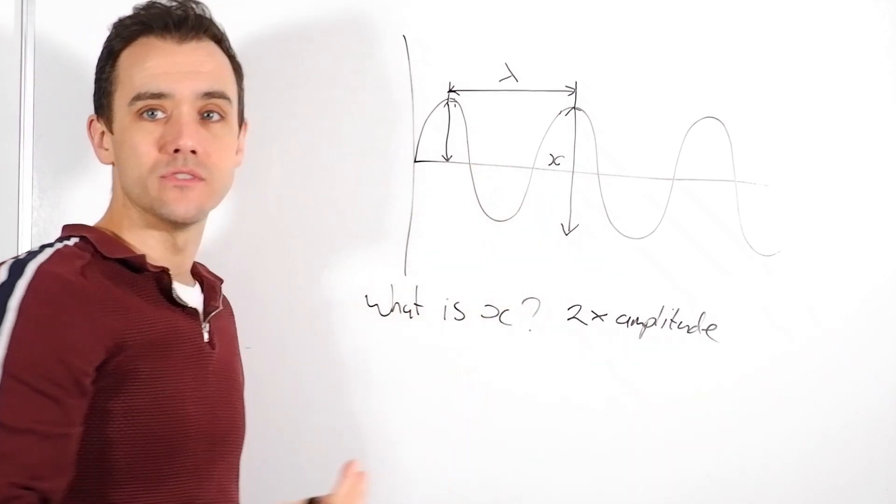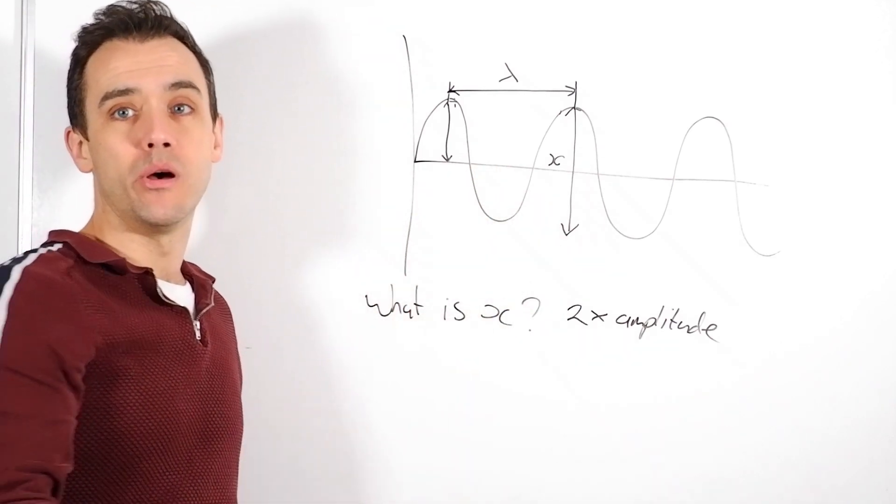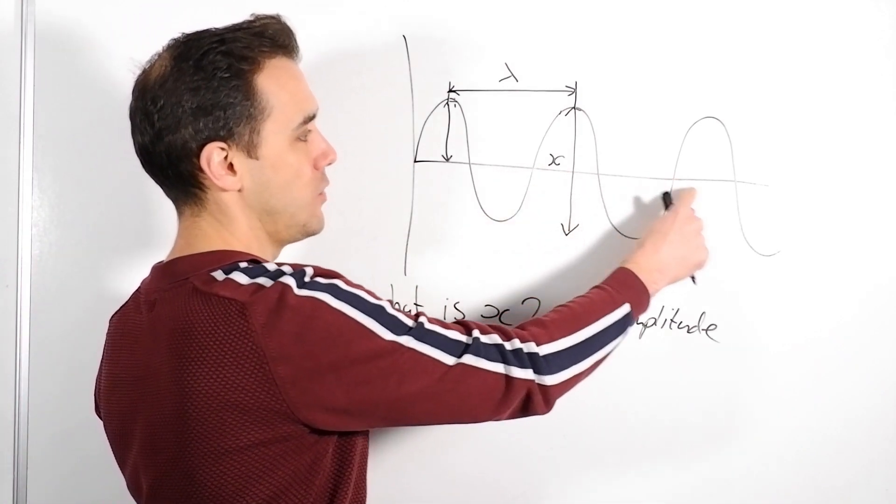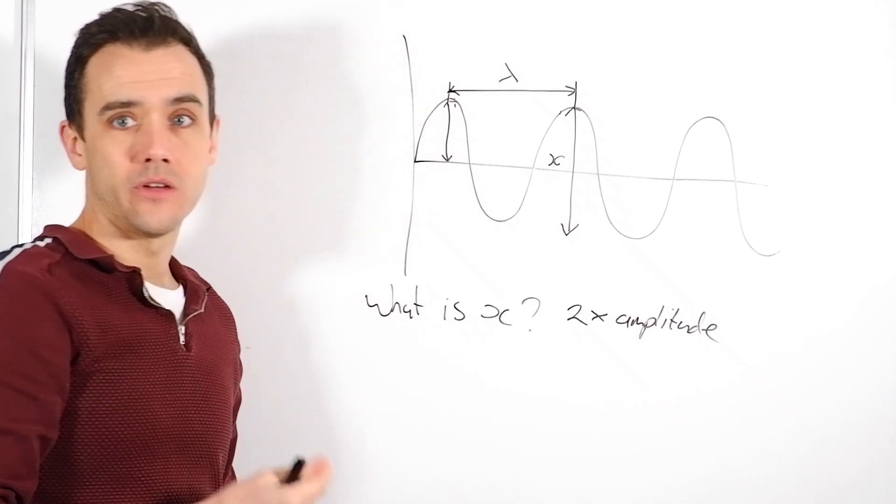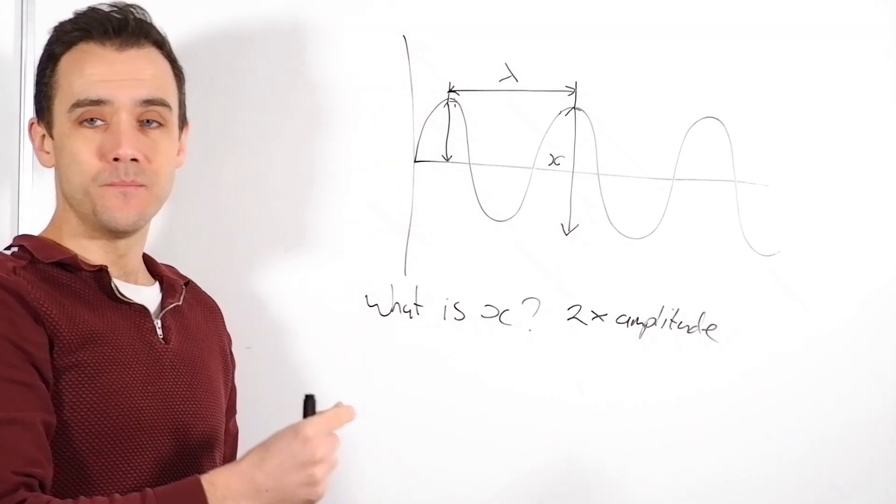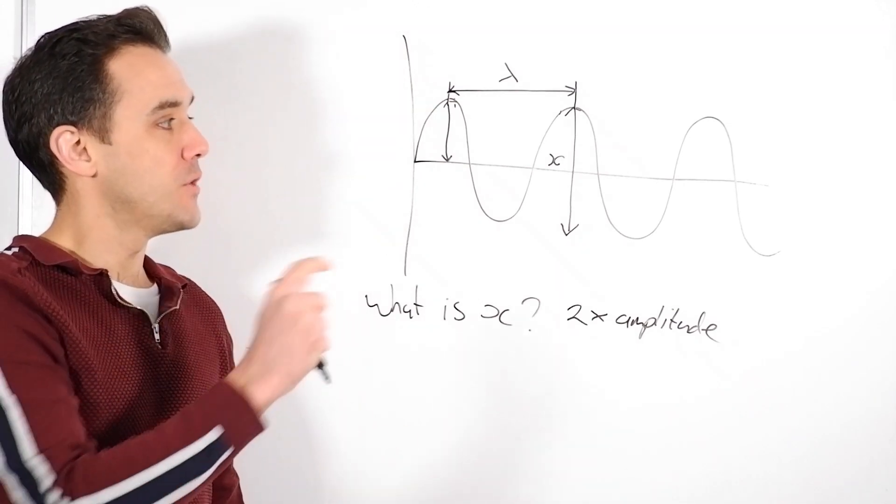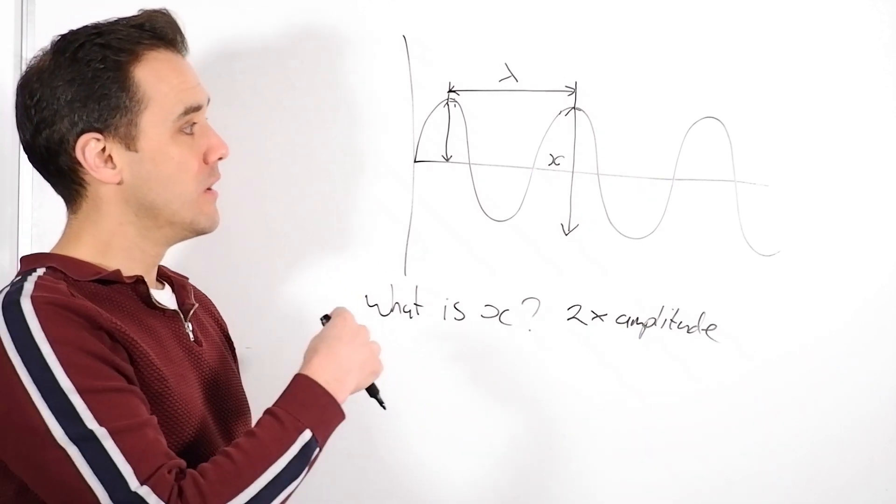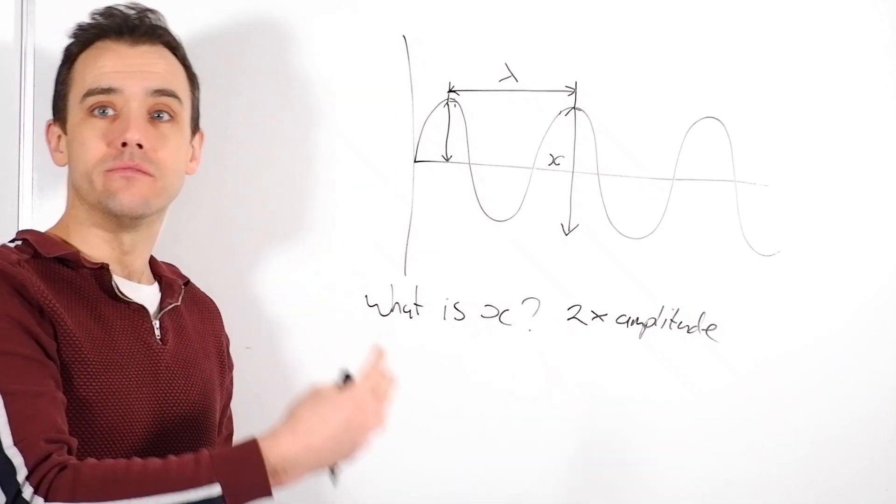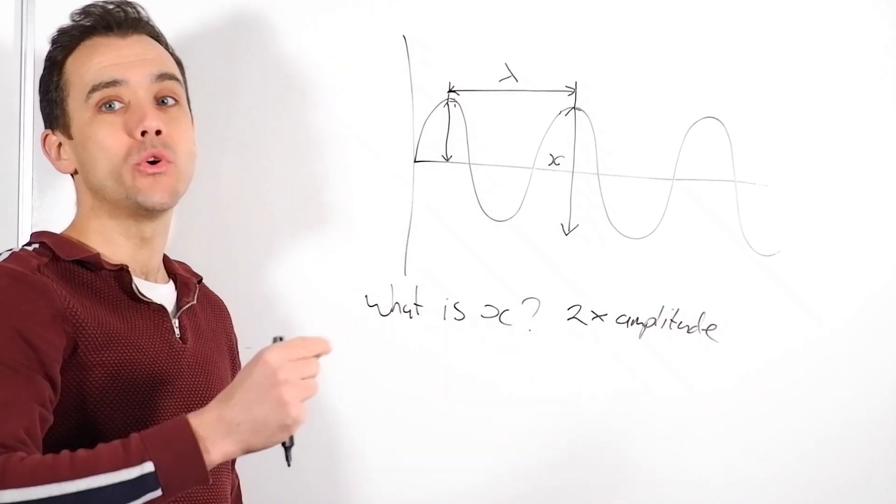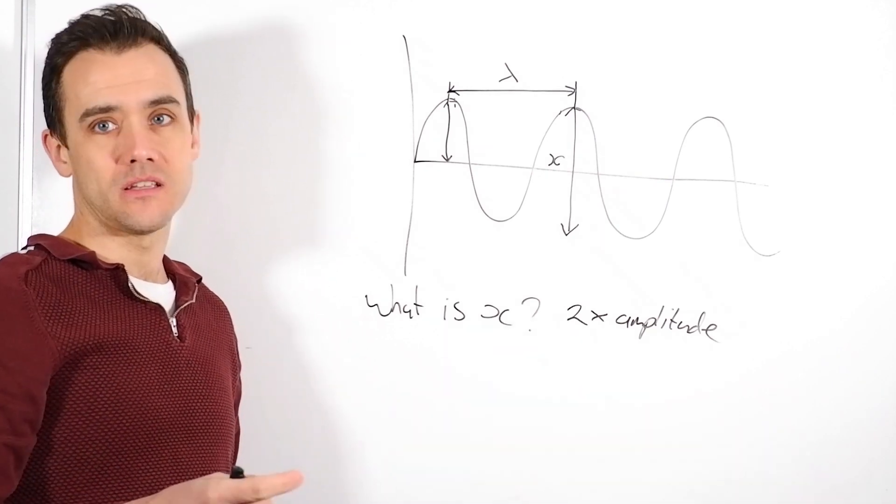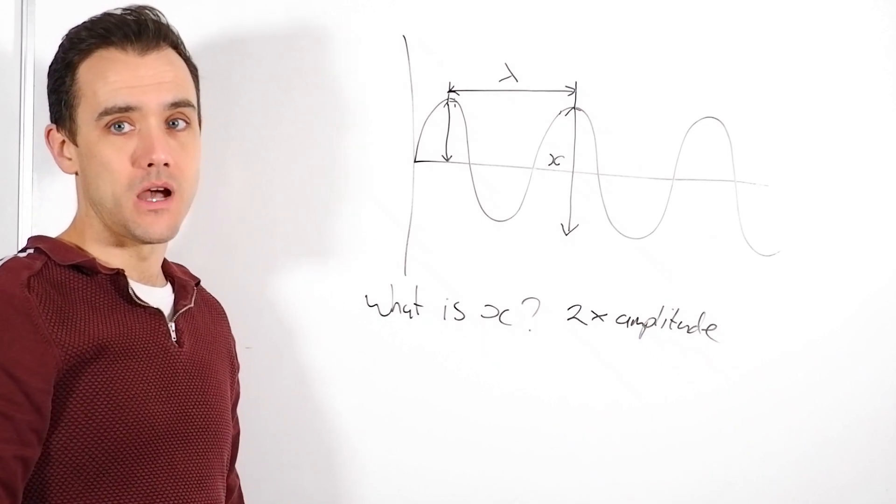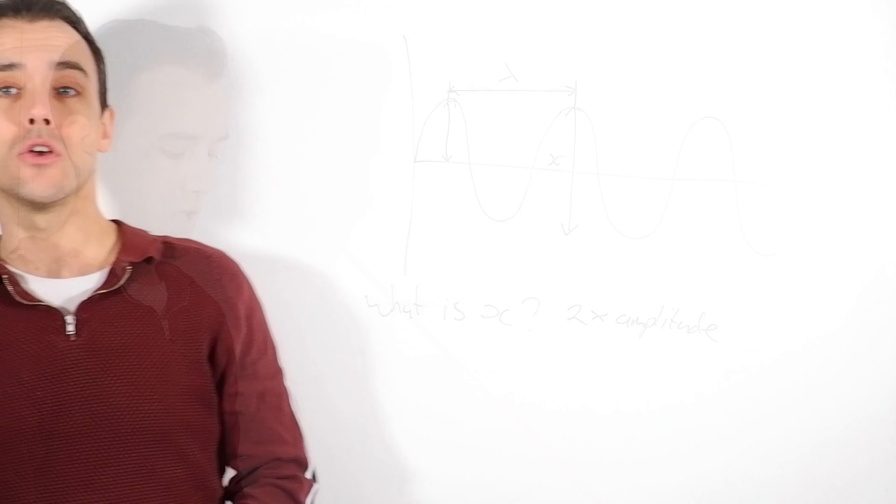So, now we have to count the number of waves. The frequency is the number of waves per second. So, in this whole thing, I've got one, two, three waves. I've got three waves in 10 seconds. So, I'd have to do waves per second. So, how many waves are there every second? Well, I'd have to do 3 divided by 10 to tell me there is 0.3 waves per second. So, 0.3 hertz would then be my frequency.